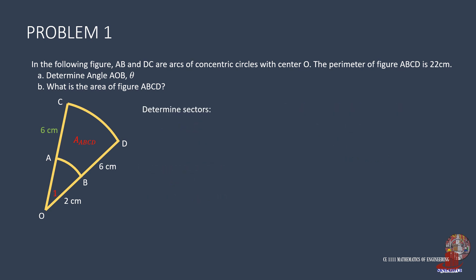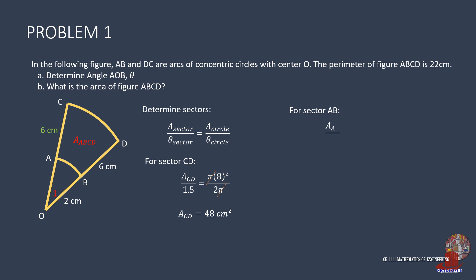Determine the sectors using ratio and proportion. For sector CD: area is to 1.5 as pi times 8 squared is to 2 pi, giving 48 square cm. The smaller sector AB is solved as: area is to 1.5 radians as pi times 2 squared is to 2 pi, giving 3 square centimeters. The area bounded by A, B, C, D is the difference of the two areas, 48 and 3, giving 45 square cm.